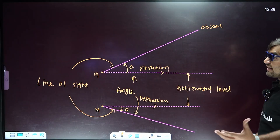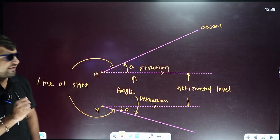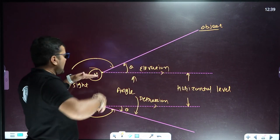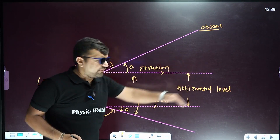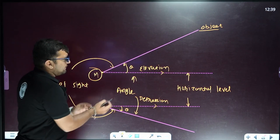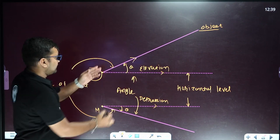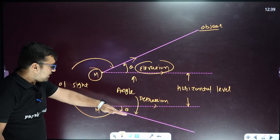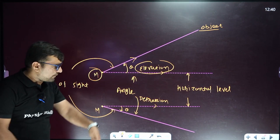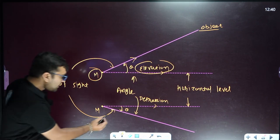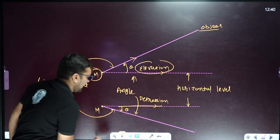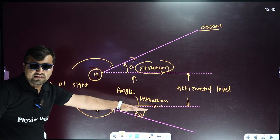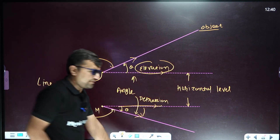Applications of trigonometry: when an observer looks at an object above the horizontal level, the angle between the horizontal line and the line of sight (upward) is called the angle of elevation. When the object is below the horizontal level — like a submarine — the angle between the horizontal line and the line of sight (downward) is called the angle of depression.